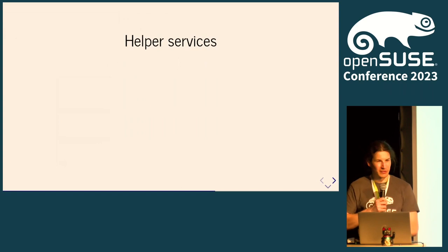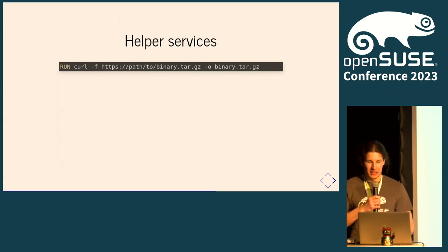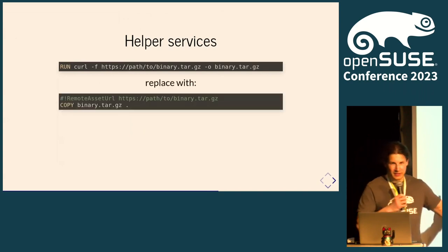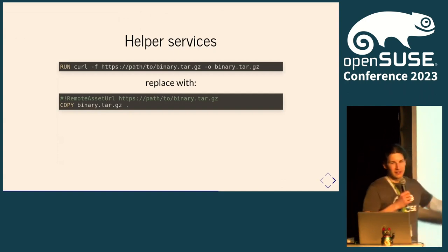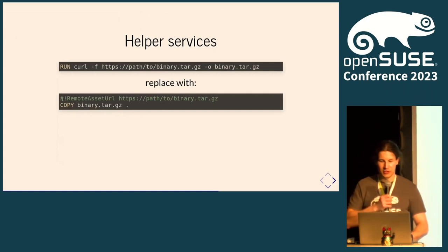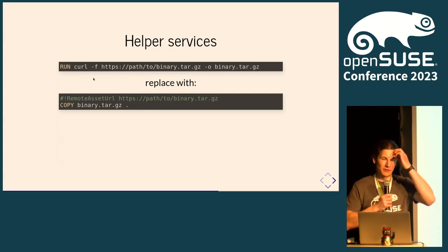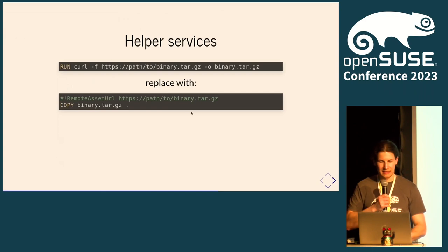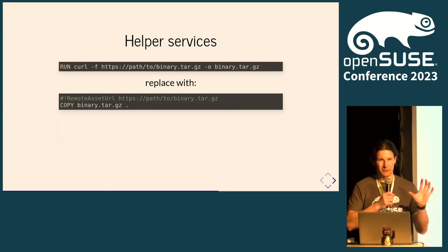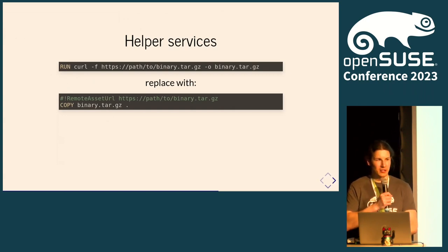What about those Dockerfiles with curl instructions where you don't want to pre-download everything? Dockerfiles now support a remote asset URL via a magic comment — you add the URL and OBS will download it for you. The binary gets downloaded into your current working directory and will be available for the build. This actually works in Dockerfiles — in contrast to what the documentation says — and also works in Kiwi files. You can use HTTP, HTTPS, Fedora's distgit, and git URLs.